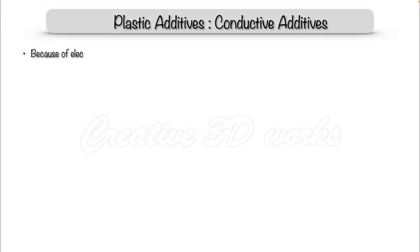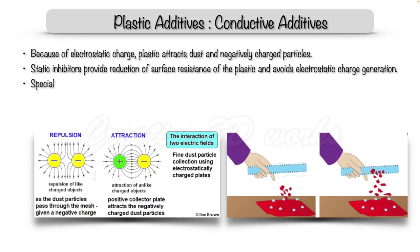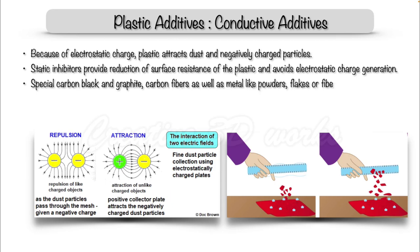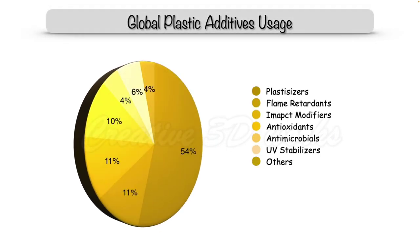Now let's see the conductive additives. Because of electrostatic charge, plastic attracts dust and negatively charged particles. Static inhibitors provide a reduction of surface resistance of the plastic and avoid electrostatic charge generation. Special carbon black, graphite, carbon fibers, as well as metal-like powder or fibers decrease the electrical conductivity of the plastic depending on the type and proportion used. In terms of additive usage: plasticizers account for 54 percent, flame retardants 11 percent, impact modifiers 11 percent, antioxidants 10 percent, and antimicrobials 4 percent.